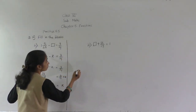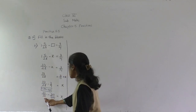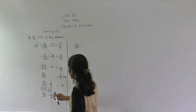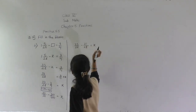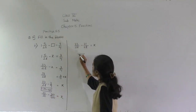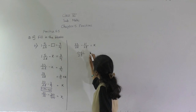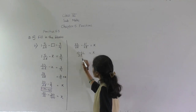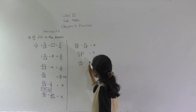So 33 upon 28 minus — 3 sevens are 21, over 4 sevens are 28 — is equal to x. Now we subtract the numerators: 33 minus 21 is equal to x. 3 minus 1 is 2, 3 minus 2 is 1. So 12 upon 28 is equal to x.